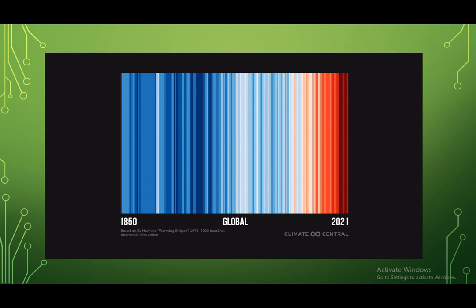This is the warming stripes that highlight global warming over the last 150 years or so. Just by looking at it you can come away with an understanding that the planet is warming. This is a really good example of using space and design elements — just a really solid graphic — to convey the most important aspects of your research.